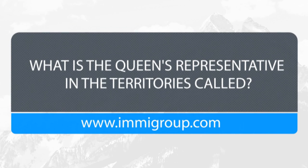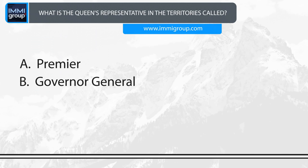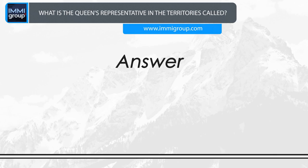What is the Queen's representative in the territories called? A. Premier. B. Governor-General. C. Commissioner. D. Member of Parliament. Answer: Commissioner.